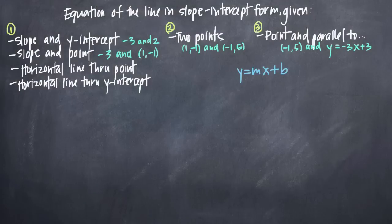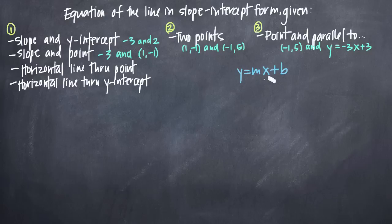In this particular problem, we've been asked to find the equation of the line in slope-intercept form given various pieces of information. The equation of the line in slope-intercept form is the formula y equals mx plus b, where m is the slope and b is the y-intercept. Given any of these pieces of information, you can use this formula to find the equation of the line.